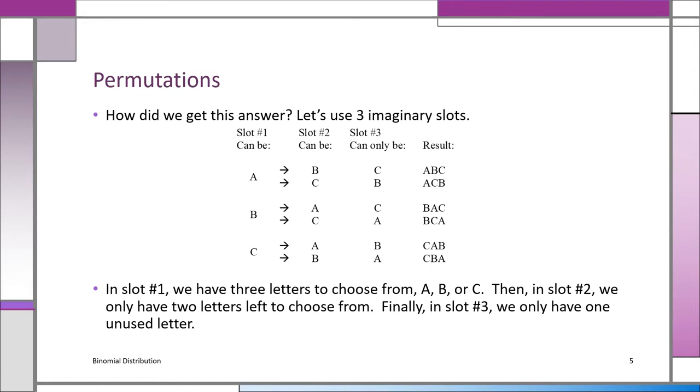Now, let's say you started in slot one, you start with a B. In slot two, you've got a choice, A or C. And let's say you have B, then A, then you're stuck. In slot three, you've got only one. Again, in slot one, we have three letters to choose from, A, B, or C. In slot two, you're only going to have two letters left. And finally, in slot three, you only have one unused letter. Notice it's three times two times one. That's how we got the six. And you can see the six different permutations.